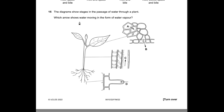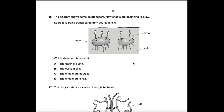Question 15: The diagrams show stages in the passage of water through a plant. Which arrow shows water moving as water vapor? Water entering root cells is osmosis, and water moving through xylem is liquid water transporting mineral ions. The only option showing water as vapor is B — transpiration from the leaf.